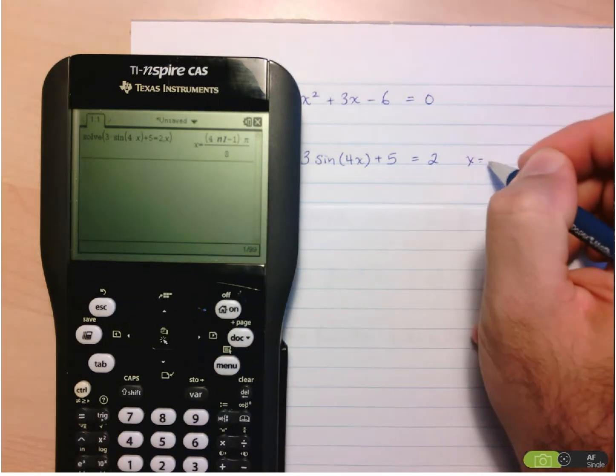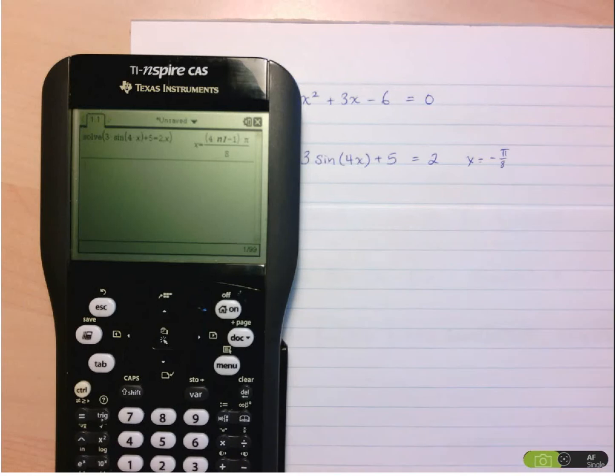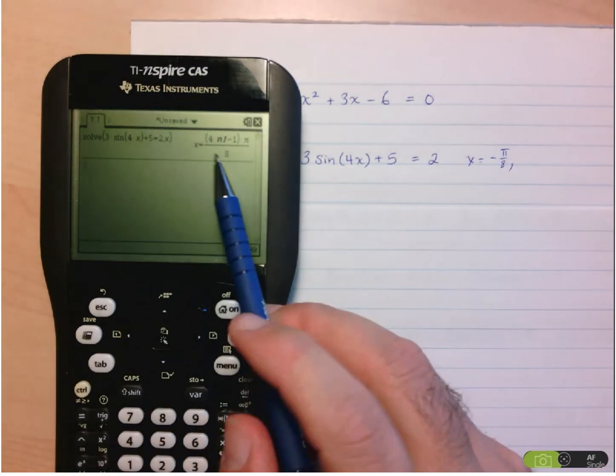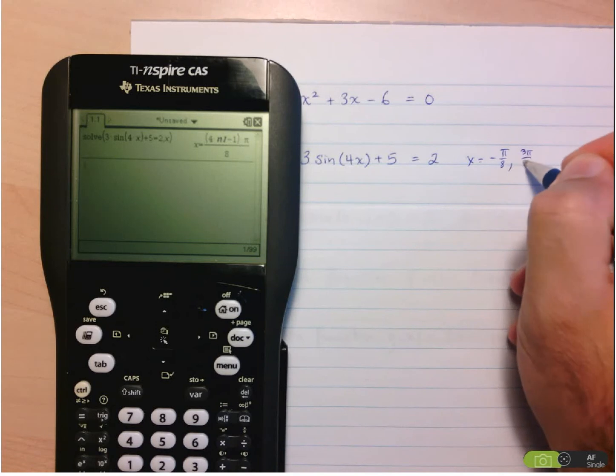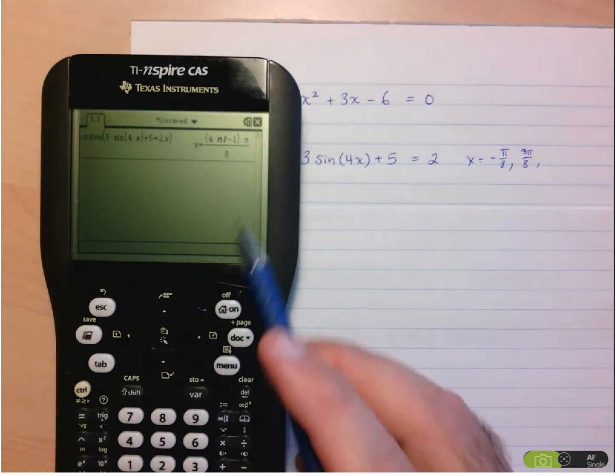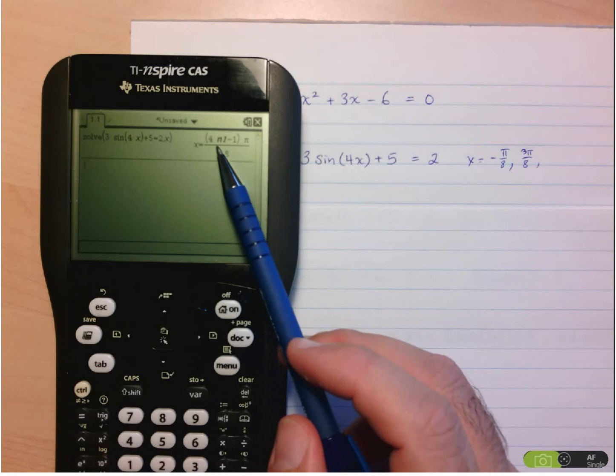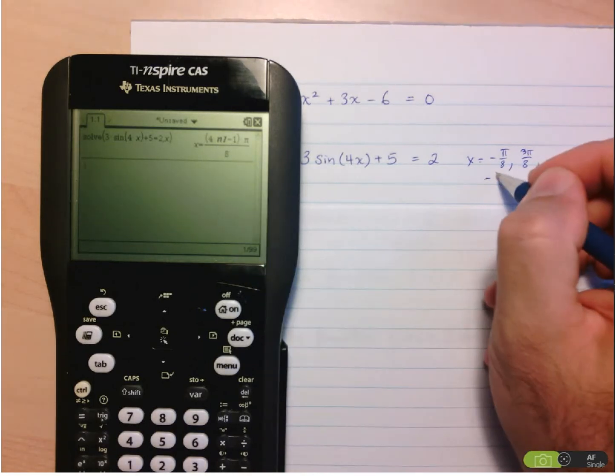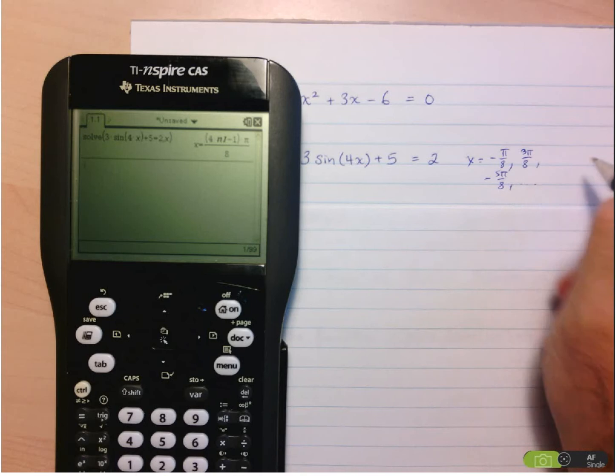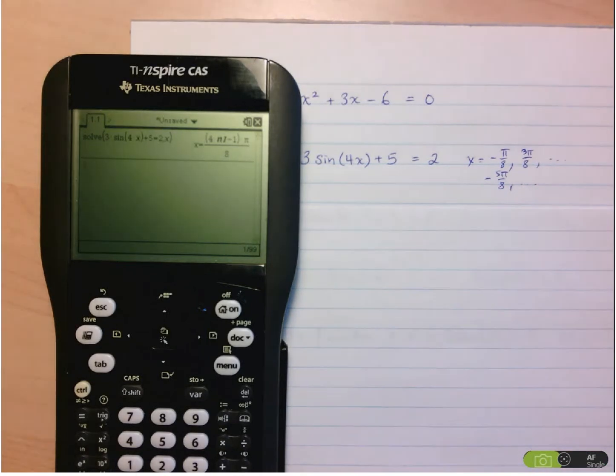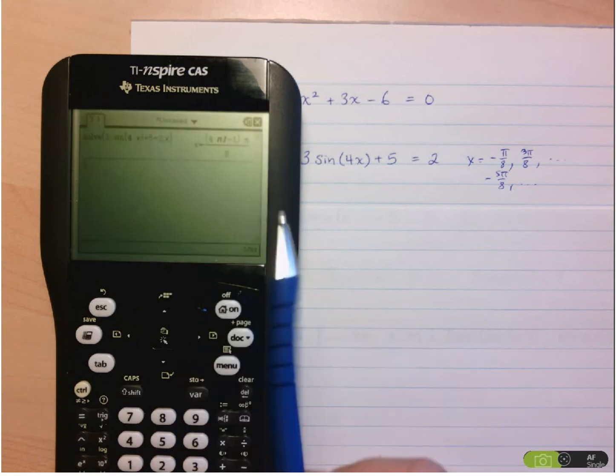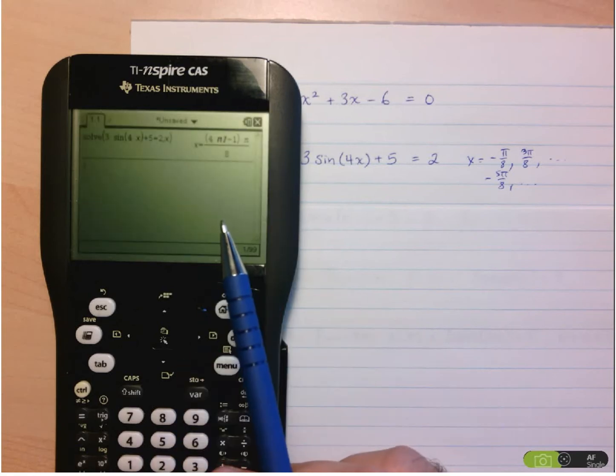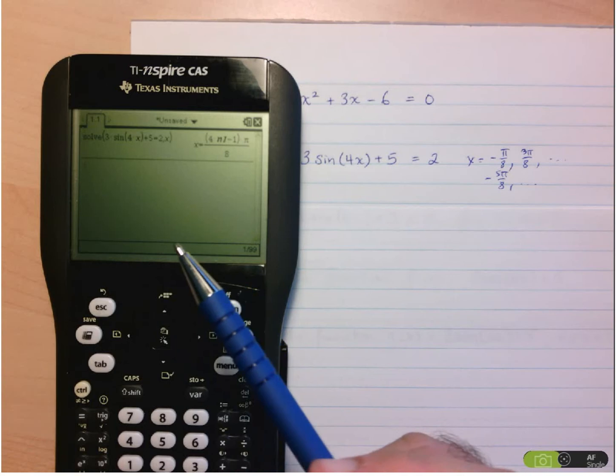But, let's input n equals 1, so 4 minus 1, 3 pi over 8, so 3 pi over 8 would be another answer. We can also input negative 1, so 4 times n, negative 4 minus 1, negative 5 pi over 8, and so on and so forth. So that's what this represents, and you might wonder why n1. Well, just because it's the first one we're using in this example. If we solve another equation on this screen, it's just going to use n2. So that's all that represents.